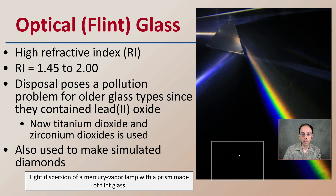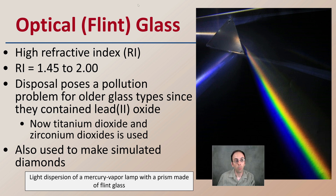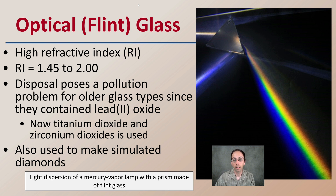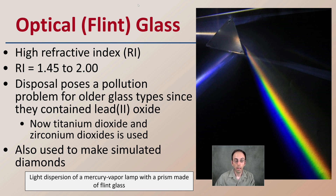Then we have optical or flint glass, which has a high refractive index ranging from 1.45 to 2.0. Disposal poses a pollution problem for older glass of this type because it tends to contain lead oxide. Now titanium dioxide and zirconium dioxide are used instead, maintaining great optical properties while being less of an environmental issue. It's also used to make simulated diamonds due to its very clear, high refractive index. The image above shows light dispersion through a mercury vapor lamp and a prism made of flint glass, demonstrating its high optical quality.